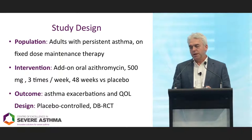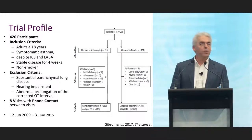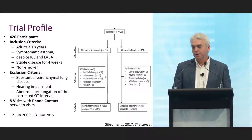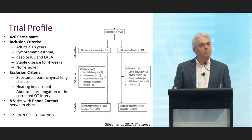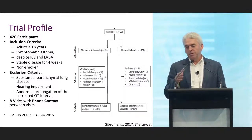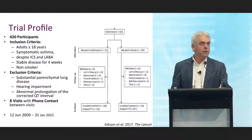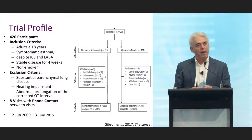We screened over 500 people and randomised 420. Patients had to be stable for four weeks and be current non-smokers. We excluded people with substantial parenchymal lung disease, hearing impairment, or abnormal QT prolongation. They visited the clinic eight times over the study period with phone contacts in between. We had a similar number of dropouts — about 40 — in both the placebo and azithromycin groups, and the study was analysed as intention to treat.